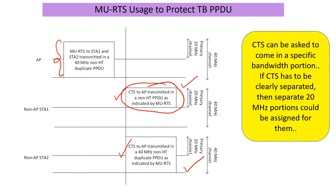MU RTS is a new frame, but sent in a way where even legacy stations can read it — including 20 MHz capable stations. When sending a 40 MHz RTS, you use what is called a non-HT duplicate, and same applies to the CTS, so even legacy stations capable of only decoding the 20 MHz portion can decode it. You can specifically ask the CTS to come at a certain bandwidth. CTS collision is not a big deal — no special receiver is needed. They go at low rate and are treated like multipath transmissions for decoding.